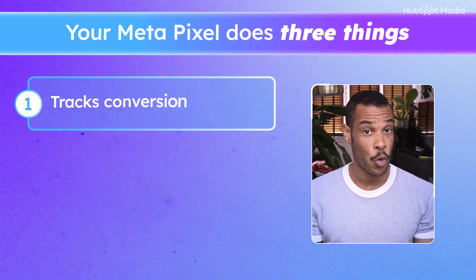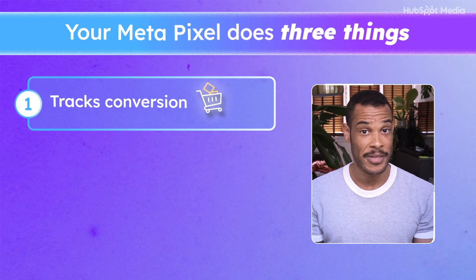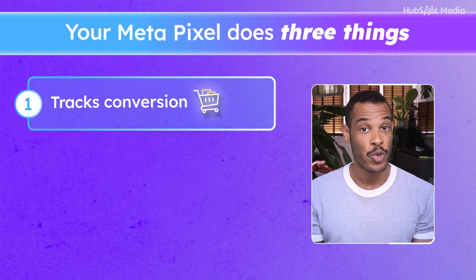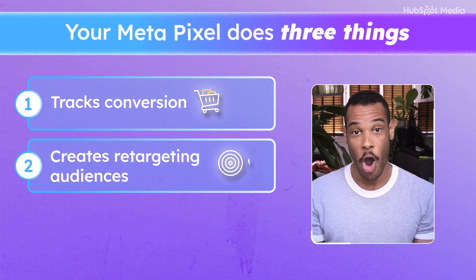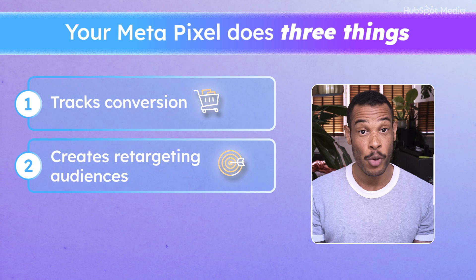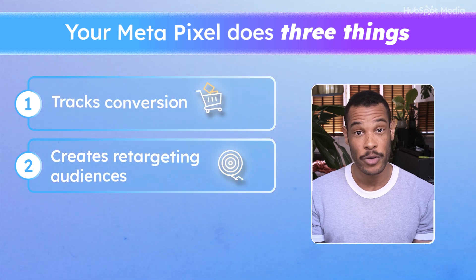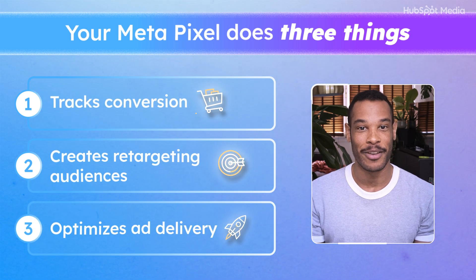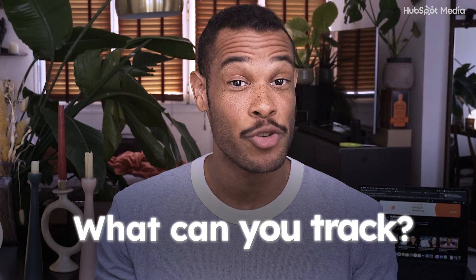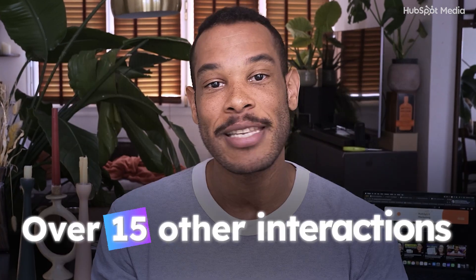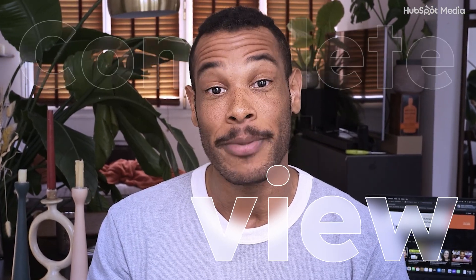Your MetaPixel does three things. It tracks conversions to show which ads drive sales and which ones waste money. It creates retargeting audiences from people who've already visited your site. And it optimizes ad delivery. So what can you track? Think purchases, signups, add-to-cart events, and over 15 other interactions, giving you a complete view of how people engage with your website.